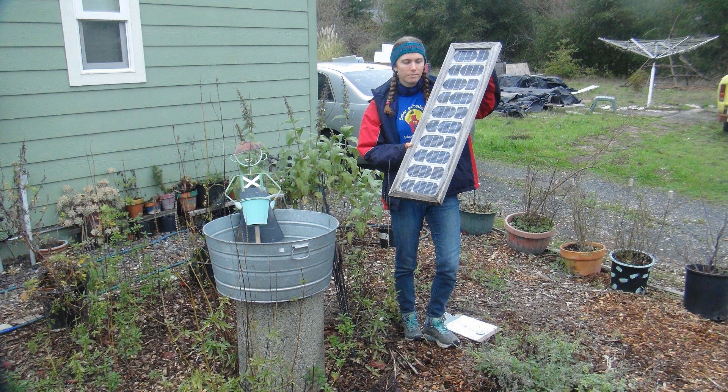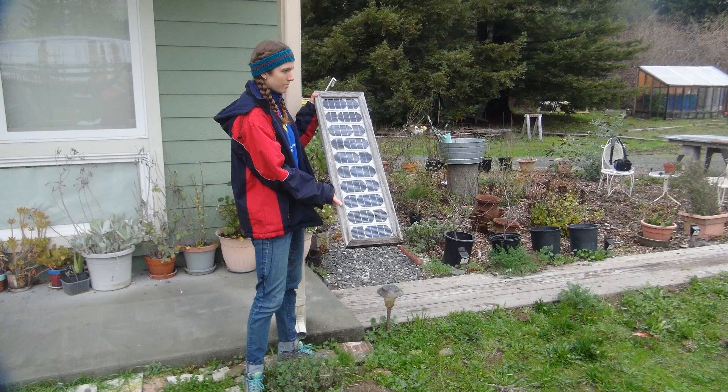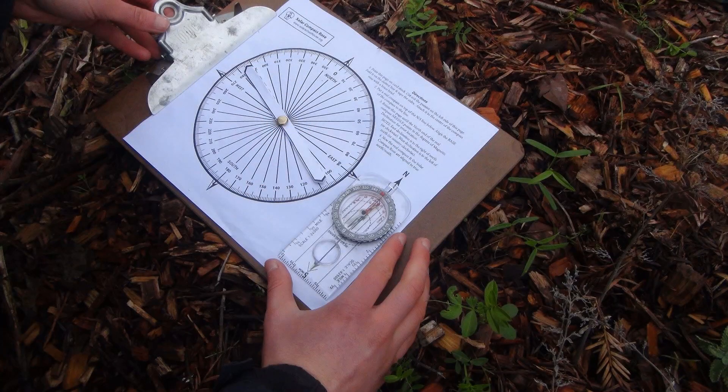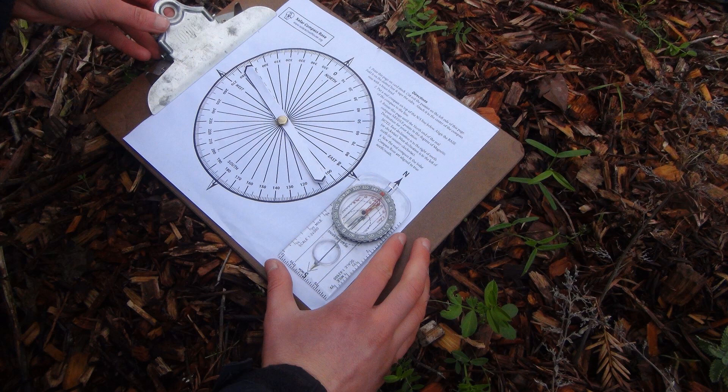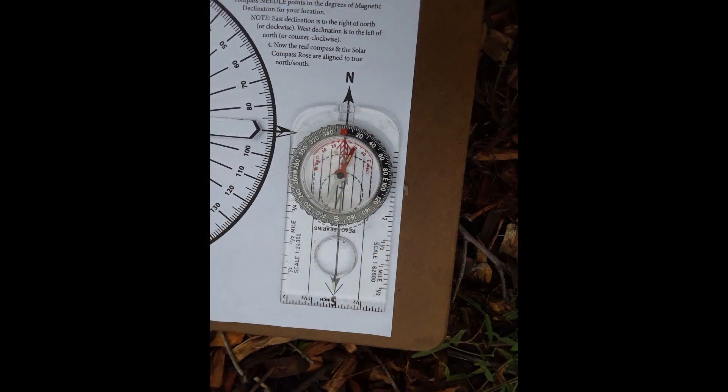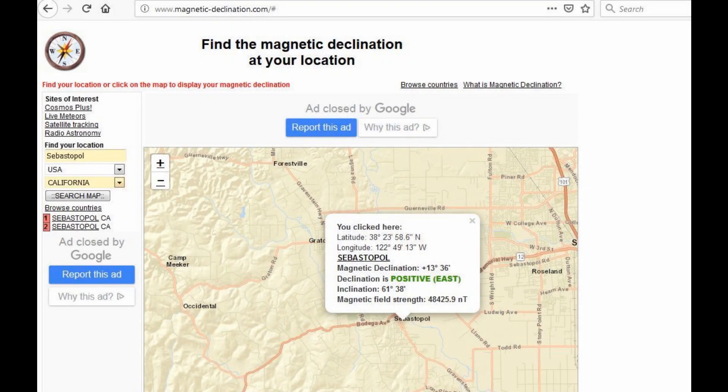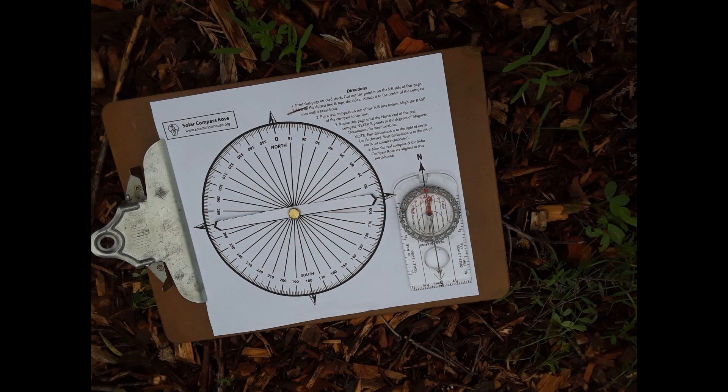Stand in the first spot where you intend to install the solar panel for your fountain. In this spot, orient the solar compass rose to north with a magnetic compass. Then correct for magnetic declination. Refer to the magnetic declination chart online for your own location. In Sebastopol, California, the magnetic declination is about 14 degrees east.